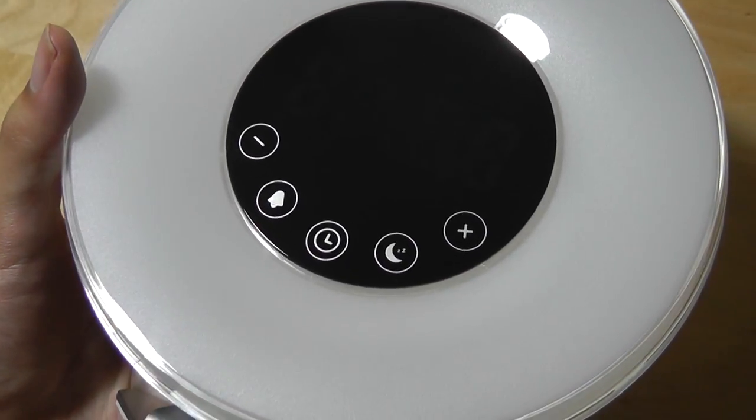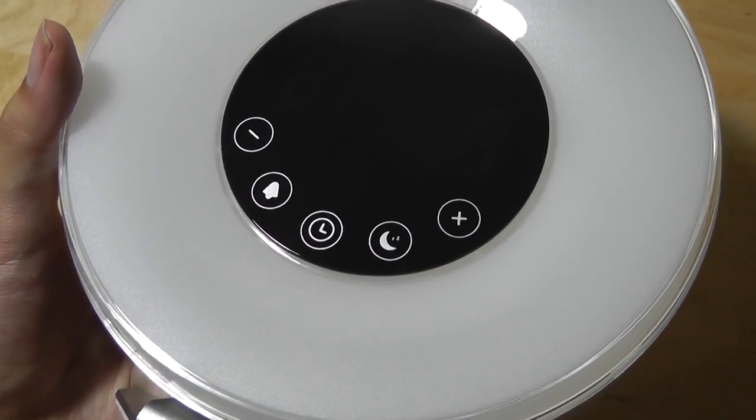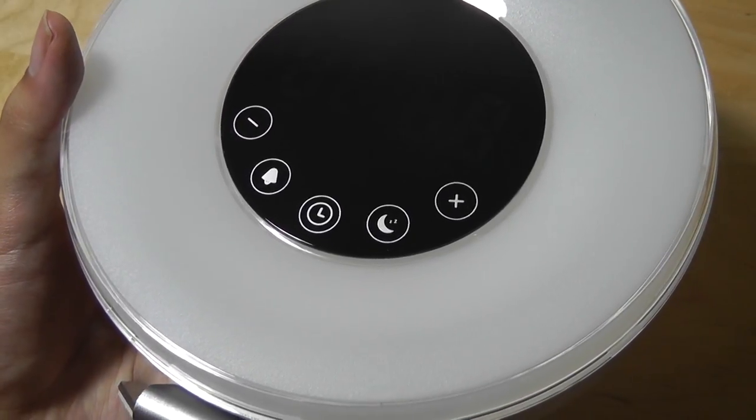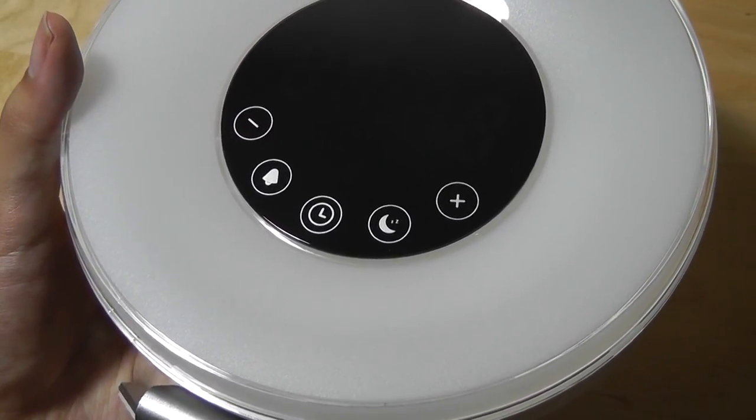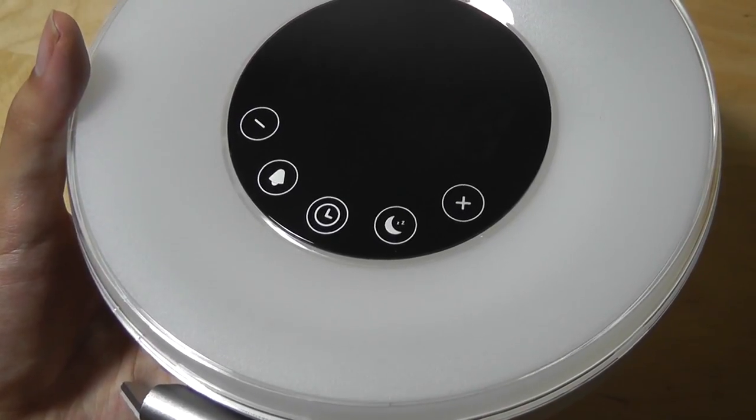So you can do the same thing with sunset simulation, which is a new feature. That means that the light gets dimmer and dimmer as you fall asleep to simulate the sun setting, so that's pretty cool.